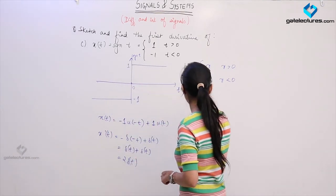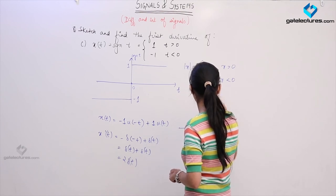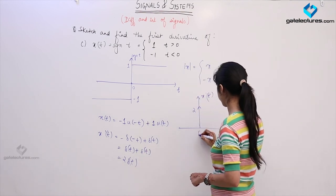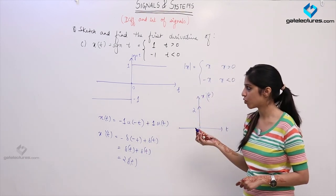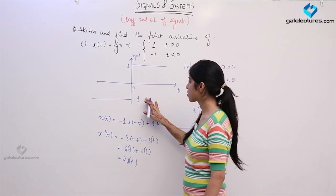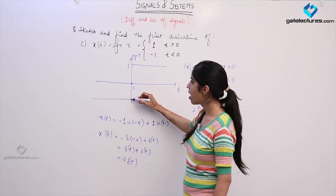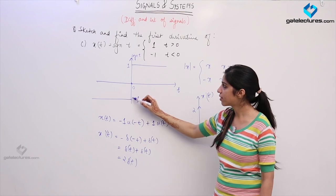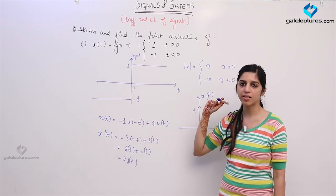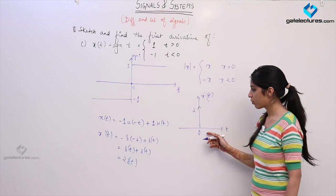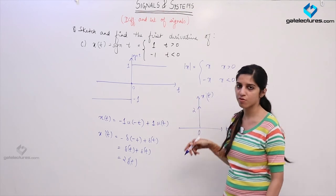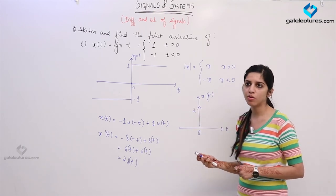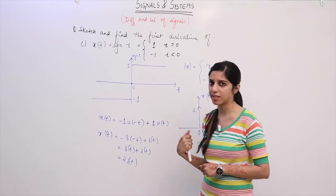So representing the derivative, we have an impulse of size 2 at t equal to 0. Graphically, the signum function has only one discontinuity occurring at t equal to 0, of size 2. So that discontinuity, when differentiated, is represented by an impulse of size 2. This is the derivative of this function. This is how we are finding the derivatives of functions. Next we are going to look at derivatives and integrals of functions in discrete time signals.